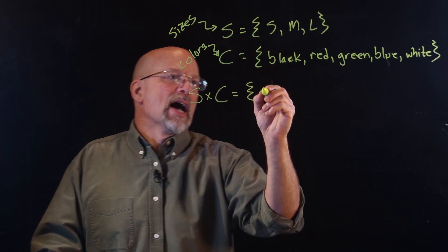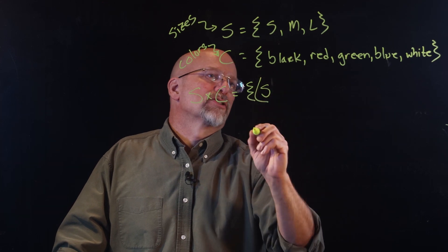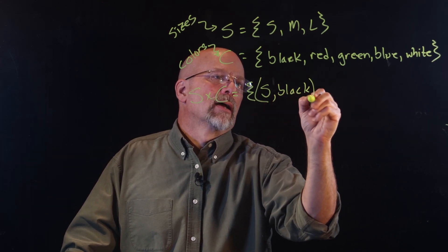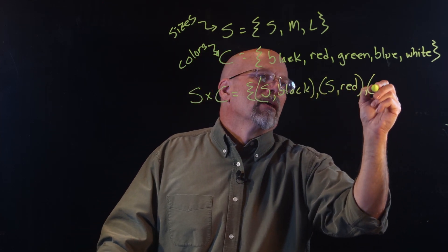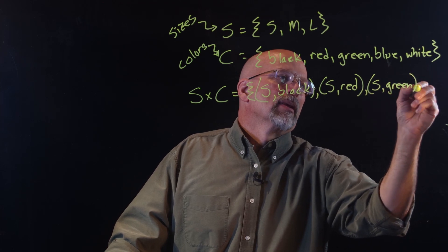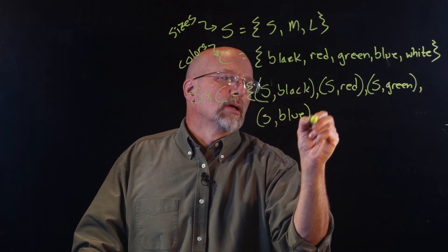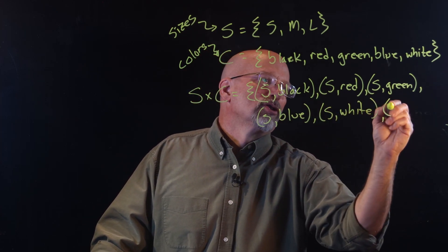So what we're looking at is S×C is going to be equal to, well, let's just, first of all, I've got a small, how many times is small going to be paired? It's going to be paired five times. So I'm going to get it with black, with red, with green, with blue, and with white.